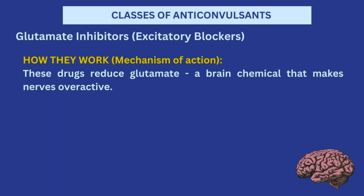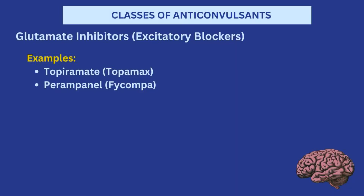Another class of medications that fall under anti-convulsants are the glutamate inhibitors. Glutamate is more or less the opposite of GABA — while GABA slows down the brain, glutamate increases the activity of the brain. So if the brain is already overactive with too many electrical impulses, and glutamate is normally enhancing that activity, you need to reduce the supply of that neurotransmitter. That's why glutamate inhibitors — medications that stop the activity of glutamate in the brain — are used. Examples are topiramate and perampanel.